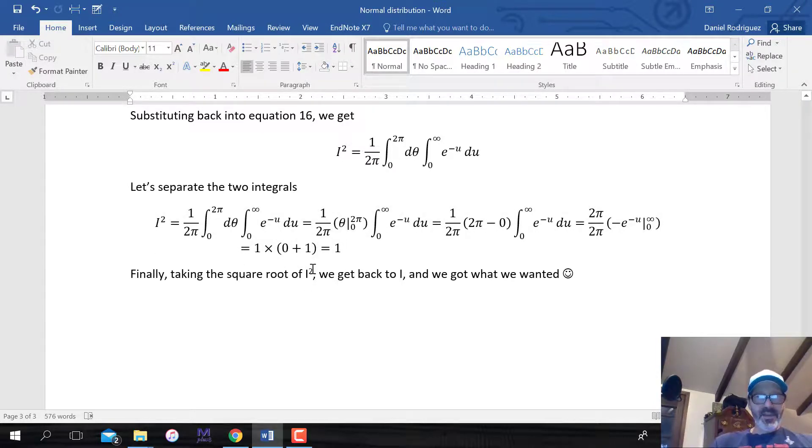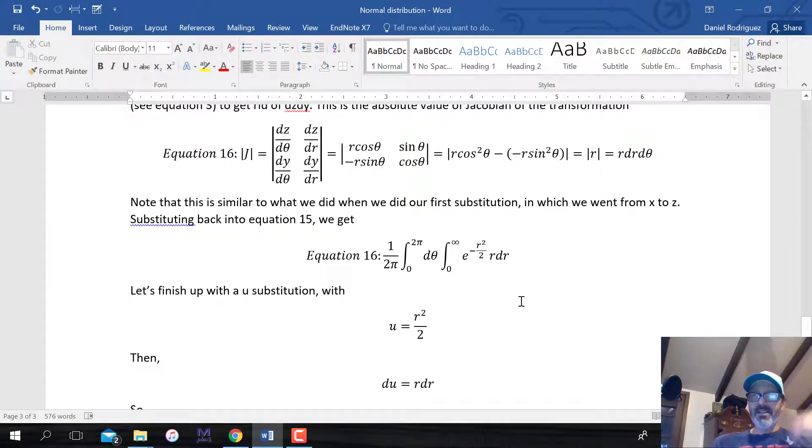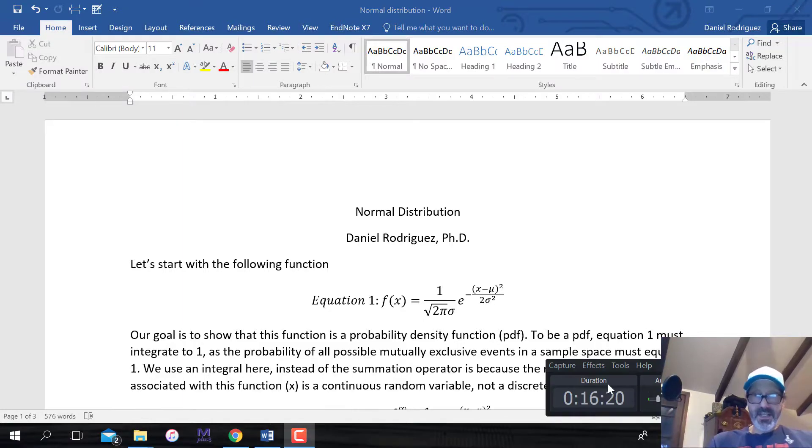Finally, we take the square root, get rid of the I squared, and look, we got one. That's what we wanted. So we have proven, or I have proven, or the royal we have proven, that this indeed is a PDF, the PDF for this normal distribution. I hope you enjoyed this, and if you have any questions, obviously you can let me know. Bye!